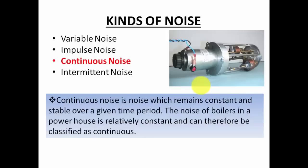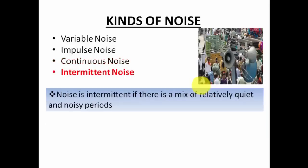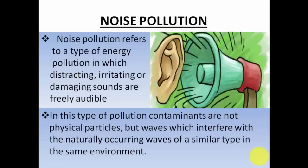The noise of a boiler in a powerhouse is relatively constant and can therefore be classified as continuous sound. Next is intermittent noise. Intermittent noise is a kind of noise where you will find a mix of relatively quiet and noisy periods. For example, in a gathering where many people have gathered, some people are whispering, some talking very loudly, some laughing, some quiet — different intensities and pitches. Sometimes there will be no noise, sometimes high pitch noise — those are intermittent noises.